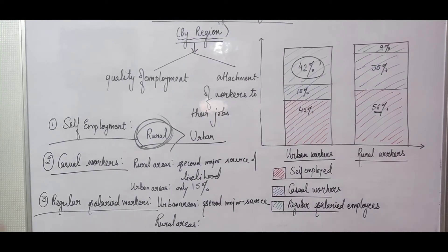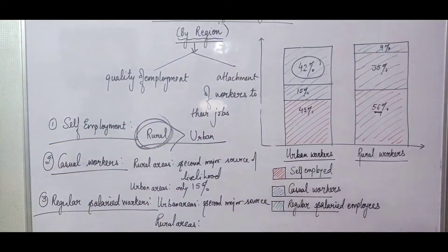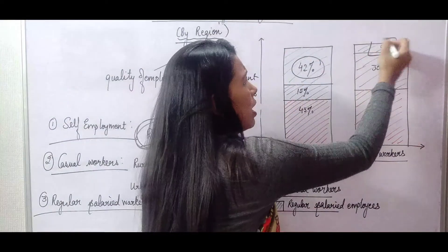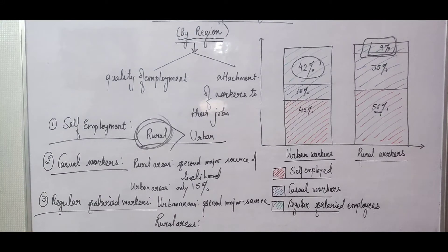In urban areas, regular salaried employment is the second major source of livelihood because people pursue higher levels of qualification and have higher levels of skills. Secondly, in urban areas there are a lot of job opportunities in enterprises. In rural areas, it is only 9 percent because people do not have much skill or qualification, and the second reason is that there are not many opportunities available.